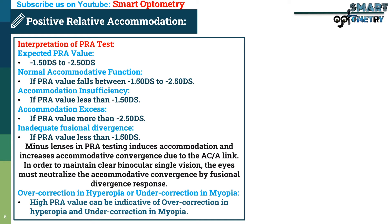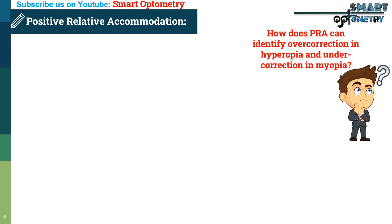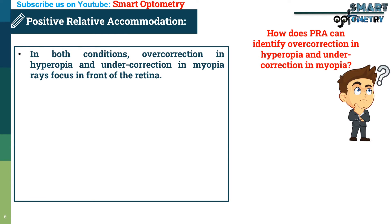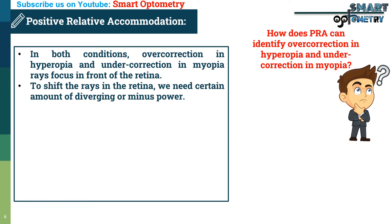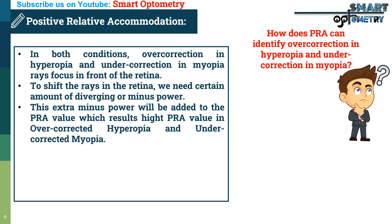High positive relative accommodation value can be indicative of over-correction in hypermetropia and under-correction in myopia. In both conditions, rays are focused in front of the retina. To shift the rays onto the retina, a certain amount of diverging or minus power is needed. This extra minus power is added to the PRA value, which results in a high positive relative accommodation value in over-corrected hyperopia and under-corrected myopia.